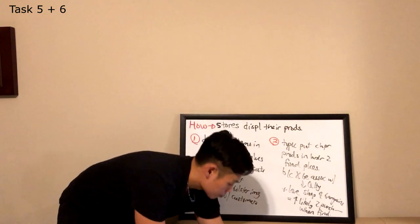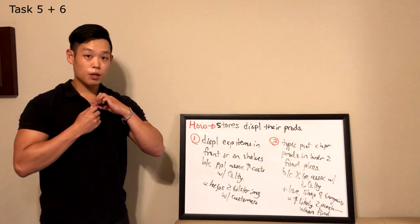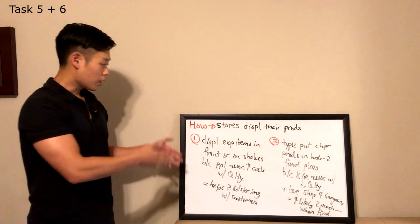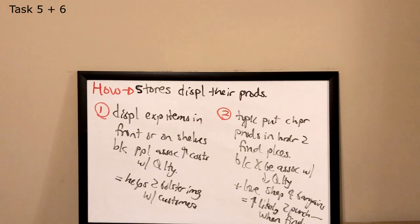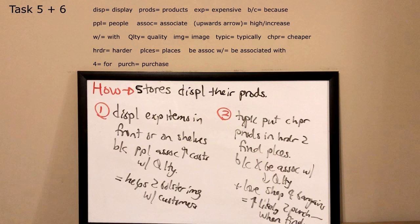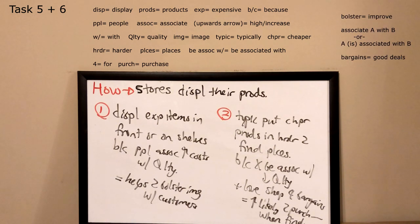All right, now once again, since this was a lecture, I'm going to bring you guys a little bit closer so we can take a really good look at what I took notes on. All right, here it is. So the beginning sentence is, the professor gave a lecture about how stores display their products. Now in the first section, I wrote down: display expensive items in front or on shelves, because people associate high costs with quality, so helps to bolster image with customers. Bolster means improve, and the way you use the word 'associate' is either associate something with another thing or be associated with something.